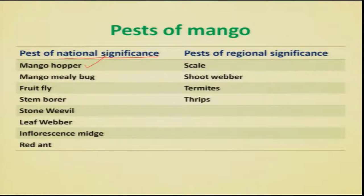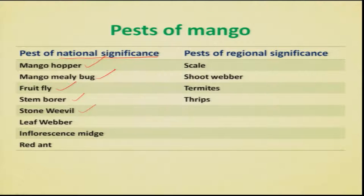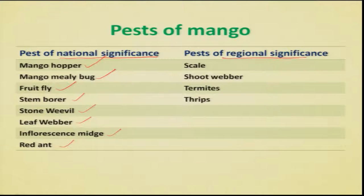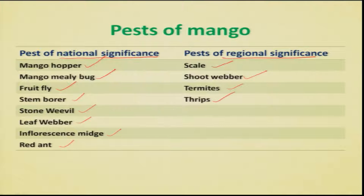At the national level, mango hoppers take the first place where they cause mainly serious damage on the inflorescence. Then the mango mealybug, fruit fly, stem borer, stone weevil, and to a certain extent the leaf webbers, inflorescence midges, and red ants. At the regional level in certain mango growing states, we occasionally get scales, shoot webbers, termites, and thrips.